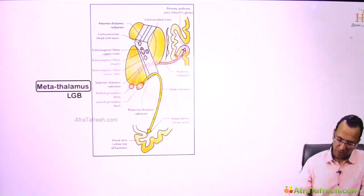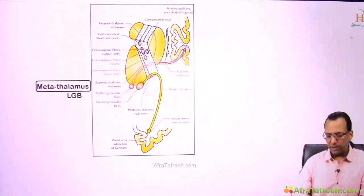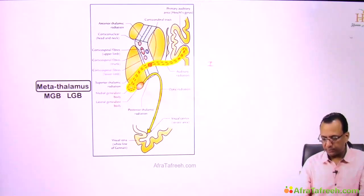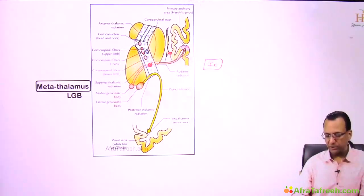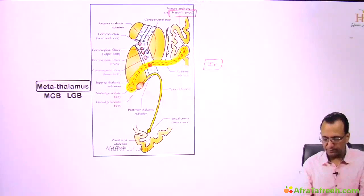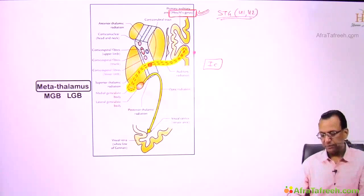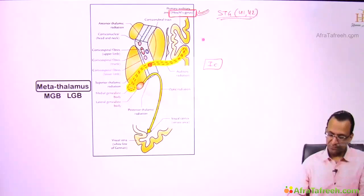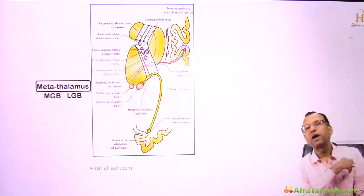When talking about the auditory pathway, the medial geniculate body sends fibers passing through the internal capsule. These fibers are going to reach the Heschl gyrus, which is the superior temporal gyrus, area number 41 and 42. The part of the internal capsule used is called the sublentiform fibers of the internal capsule, because they pass under the lentiform nucleus.